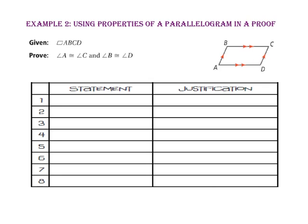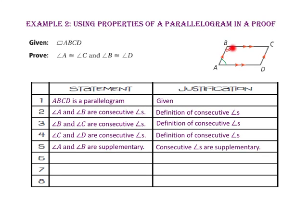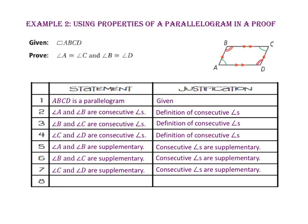Starting with the given that quadrilateral ABCD is a parallelogram, angles that share a side are consecutive angles, so angle A and angle B, angle B and angle C, and angle C and angle D are each consecutive angles by definition. Since consecutive angles are supplementary, angle A and angle B are supplementary, angle B and angle C are supplementary, and angle C and angle D are supplementary. Since angle A and angle C are both supplementary to angle B, angle A is congruent to angle C.